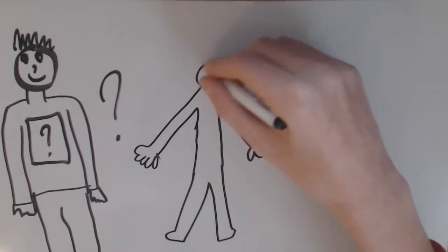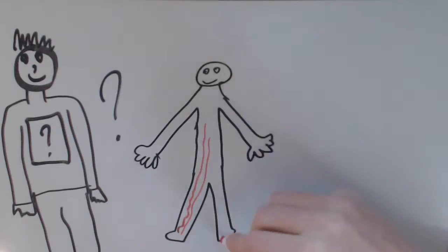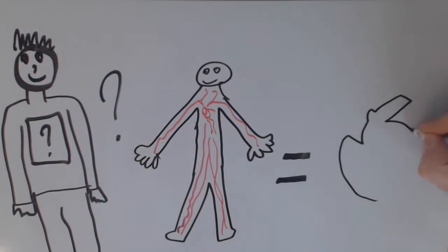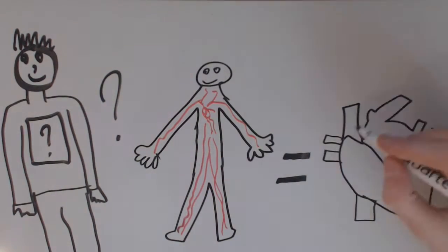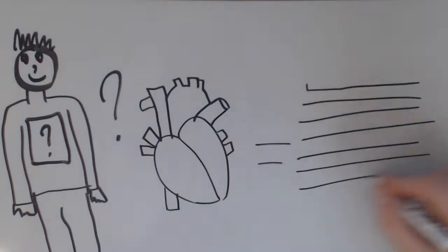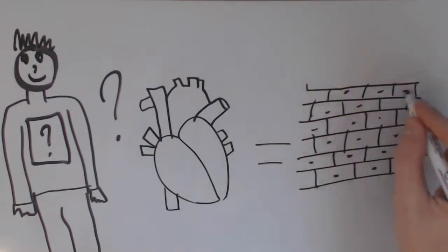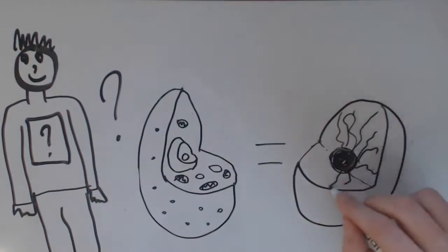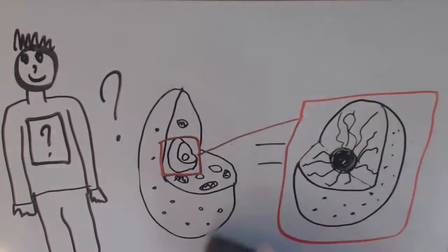These systems are all made out of organs. The circulatory system, for example, contains the heart. What are organs made out of? They're made out of tissues that are made out of cells that contain cores, otherwise known as nuclei.